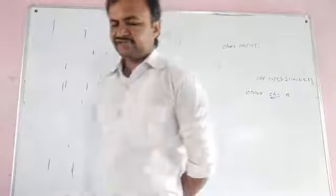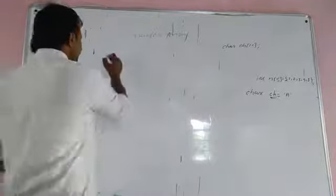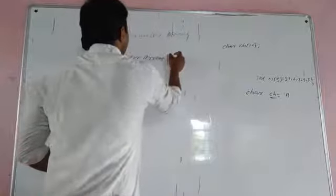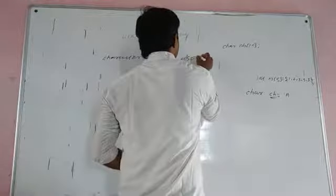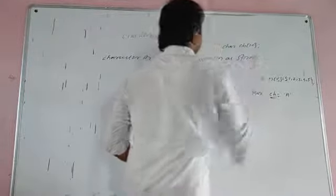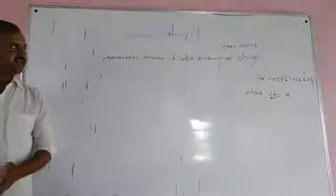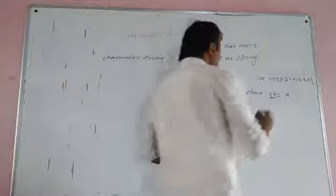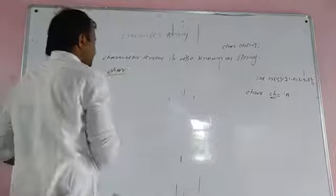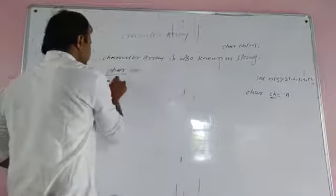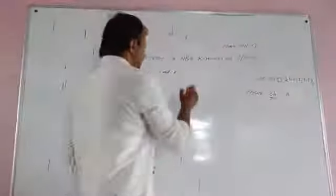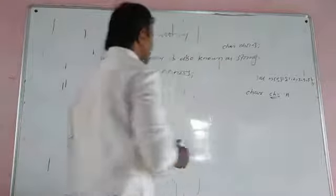A string is a sequence of characters. A character array is also known as a string. If you have a string, you can use the character data type. For example, CH is a character variable. If you have a variable of a certain type, you can use a single one-dimensional array.